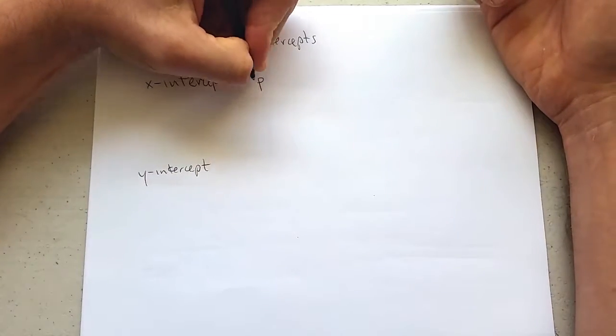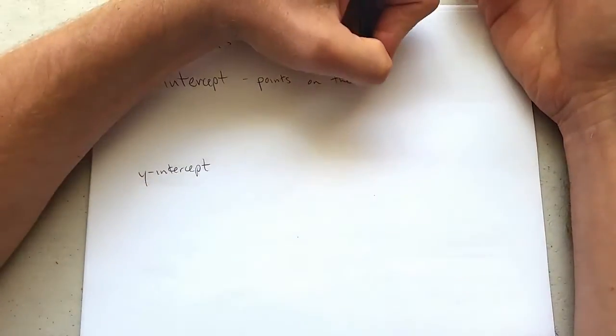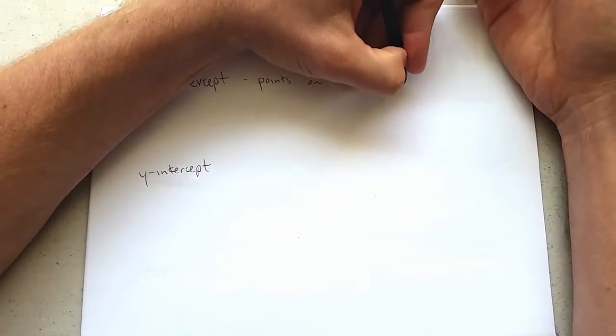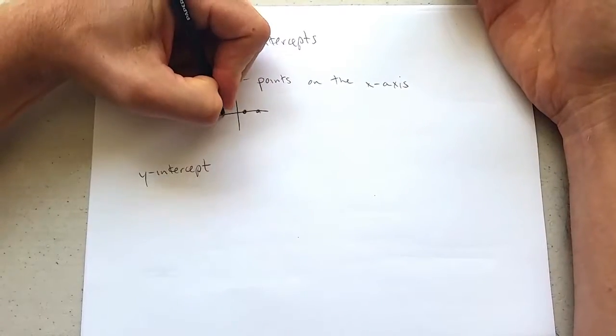x-intercepts are points on the x-axis. What do those look like? Here's just a few examples.